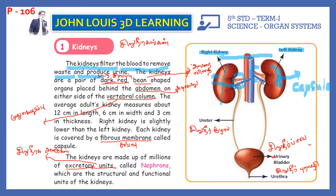This is the capsule — it is the fibrous membrane called capsule. The kidneys are made up of millions of excretory units called nephrons — N-E-P-H-R-O-N-S — which are the structural and functional units of the kidneys.